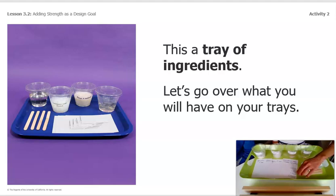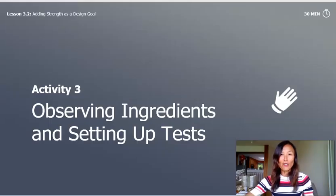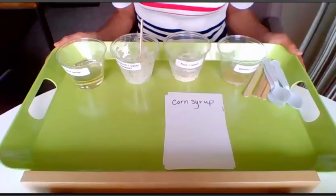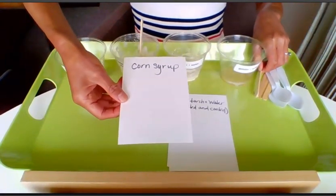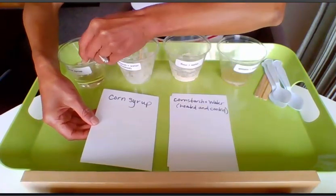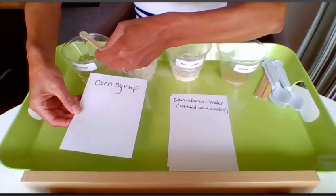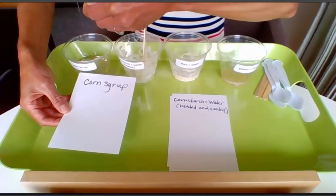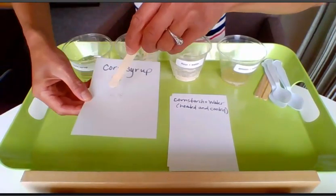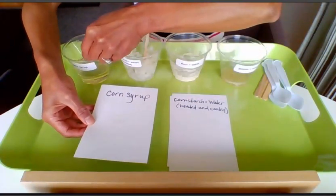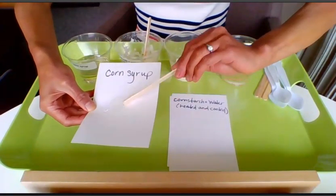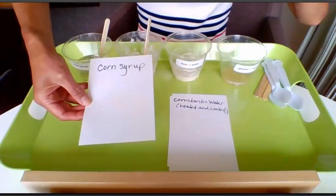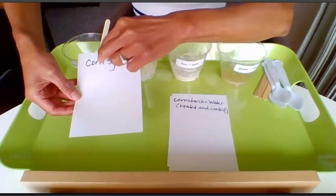We have our paper clips that I'll show you how to use to conduct the test. Activity three: Observing Ingredients and Setting Up Tests. Let's start with corn syrup. I have my test card that says corn syrup, and I'm going to take a stir stick and put a little sample right in the middle of the card. One thing I noticed about the corn syrup is that it was really runny — you can see on the card it was runny and very thin.